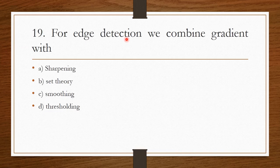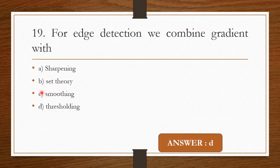Question 18: For edge detection, we combine gradient with — Option A: Sharpening. Option B: Set theory. Option C: Smoothing. Option D: Thresholding. The correct answer is thresholding — the gradient should be combined with thresholding.